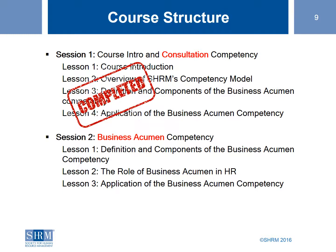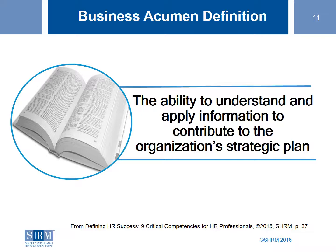So what is business acumen? It's the ability to understand and apply information to contribute to the organization's strategic plan. Every two years, SHRM does a survey about HR departments, and business acumen is our lowest score as HR professionals. The reason is that CEOs don't think we know the business and how HR contributes to the organization's strategic plan.